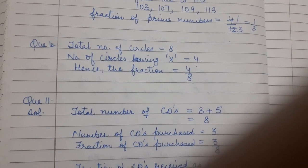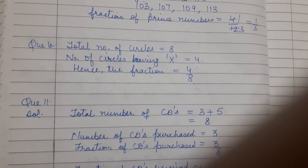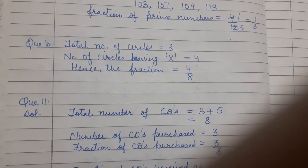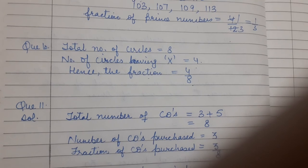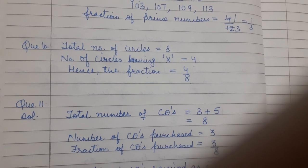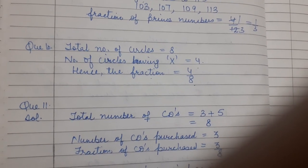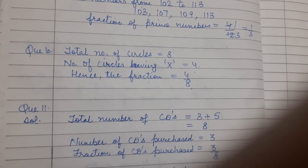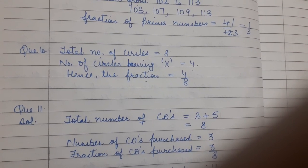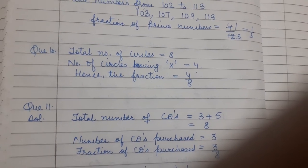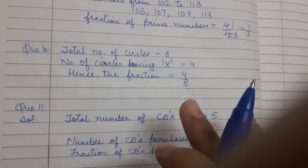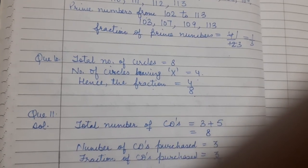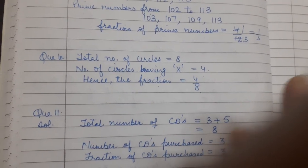11th: Kristen received a CD player for her birthday. She bought 3 CDs and received 5 others as gifts. The question is asking what fraction of her total CDs did she buy and what fraction did she receive as gift? First, total number of CDs is 3 plus 5, that is 8. Number of CDs purchased: she bought 3, so the fraction of CDs purchased is 3 upon 8.